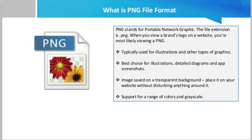PNG was created in 1995 to be a free alternative to the GIF format for transferring images on the web. It improved upon the limitations of GIF, which supported a limited number of colors and included a patent license. Additionally, while GIF images only support fully opaque or fully transparent pixels, PNG images may include an eight-bit transparency channel, which allows image colors to fade from opaque to transparent.